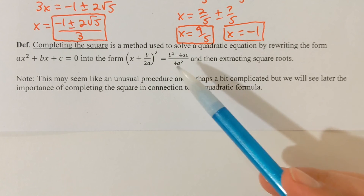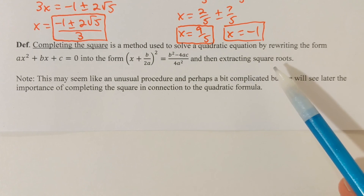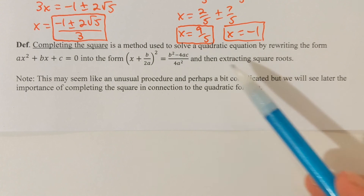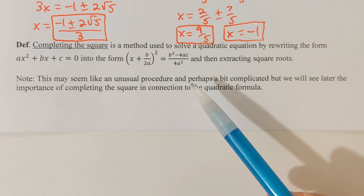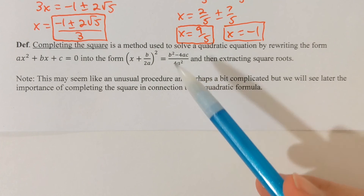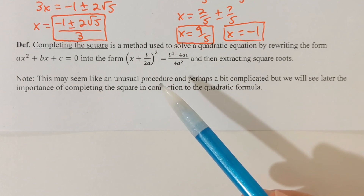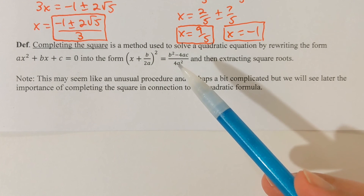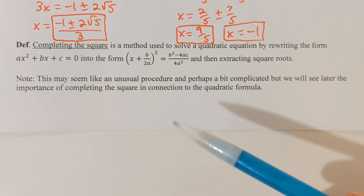Once we're in that form, we're going to apply the square root property — we're going to take the square root of both sides. So we need to know the square root property first before we complete the square, since we're going to be using that property in the process.